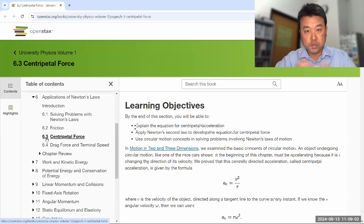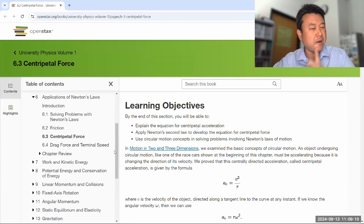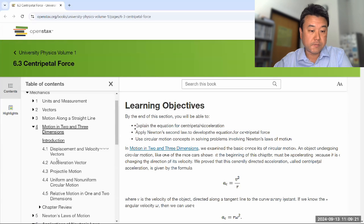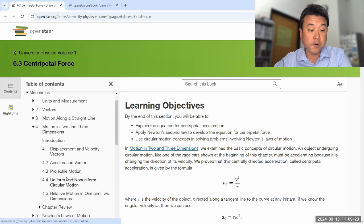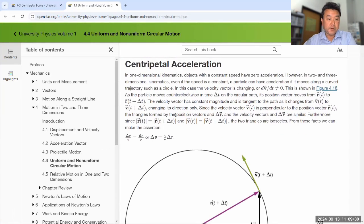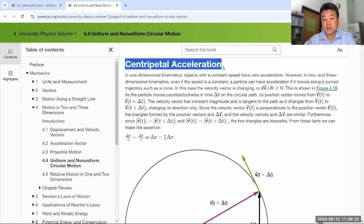As you look at Newton's Law strategy problems dealing with circular motion, I would recommend that you go back to Chapter 4, Motion in 2 and 3 Dimensions, and look at the description of the uniform and non-uniform circular motion. In Chapter 4, Section 4.4, it talks about the uniform and non-uniform circular motion. And really, the part that's important is the centripetal acceleration.